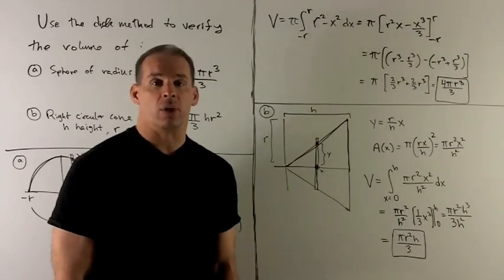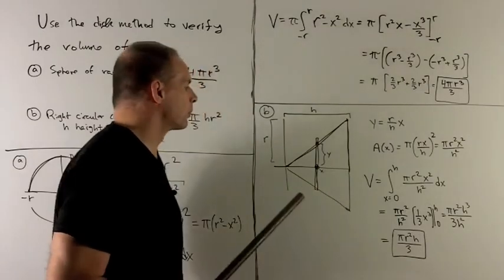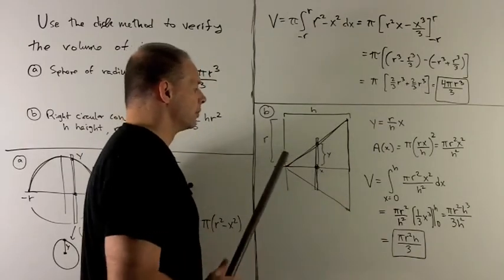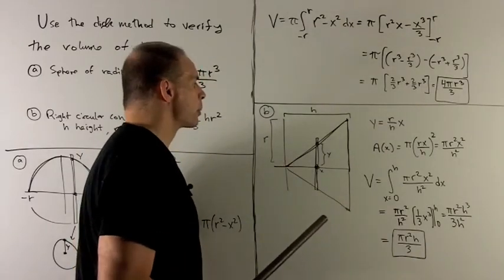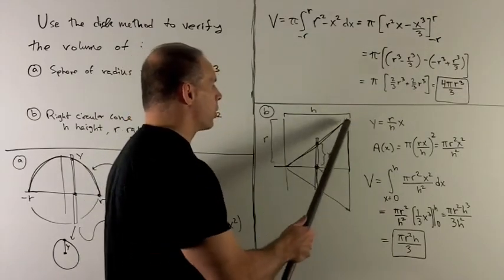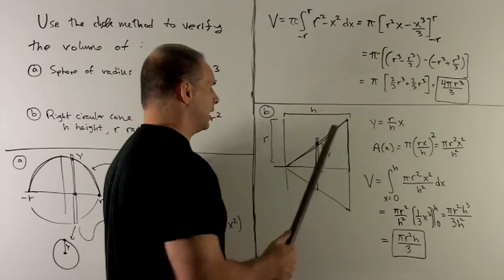Let's take a look at the right circular cone. Here, I'm going to put the cone on its side just so we can use the variable x instead of y. So let's take a look. We have, for the top part of the cone, a straight line.